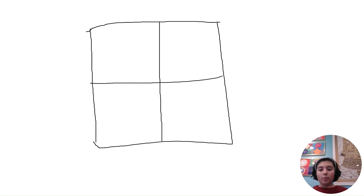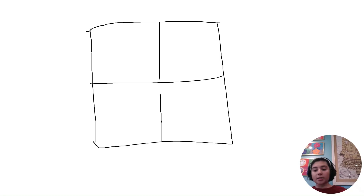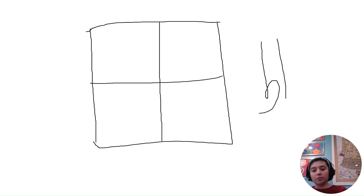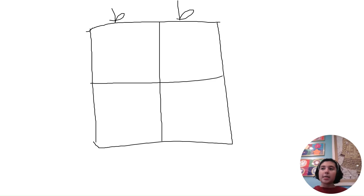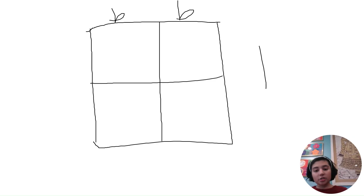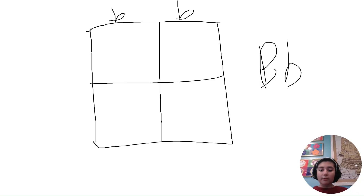Let's say that this is the trait of eye color, and say that brown eyes are dominant to blue eyes. One parent is homozygous recessive with blue eyes, so that means their genotype would be two lowercase b's — one letter goes in each section of the top part of the box. The other parent is heterozygous dominant with brown eyes, so their genotype would be one uppercase B and one lowercase b, meaning they still carry the recessive allele.